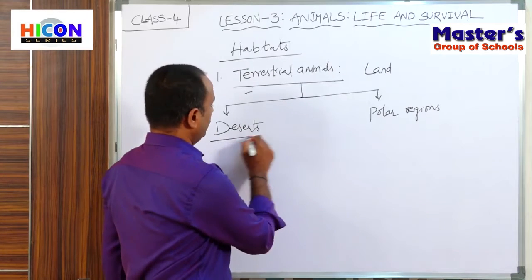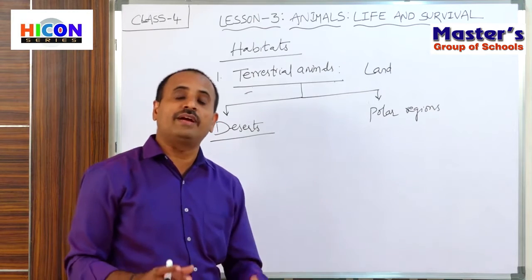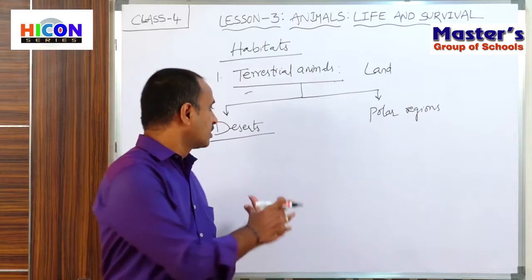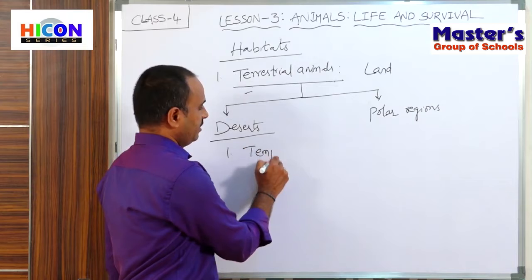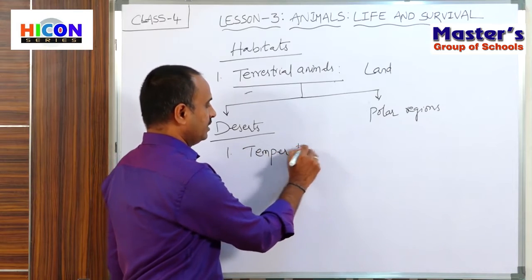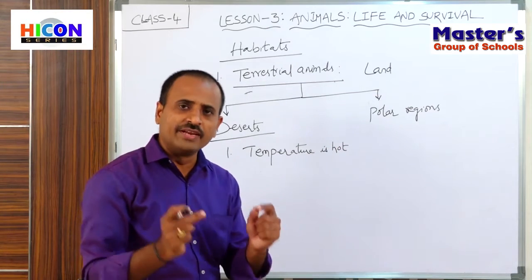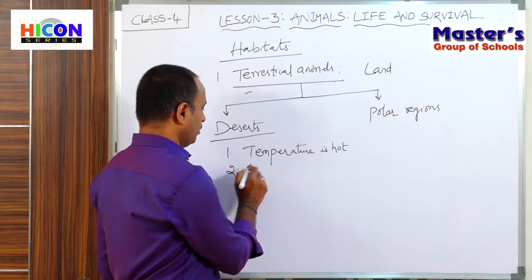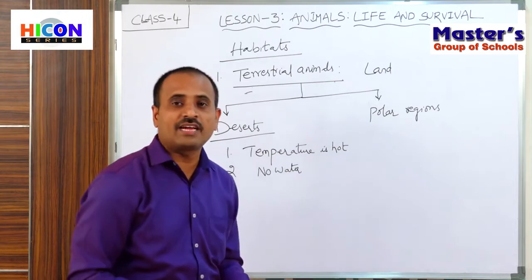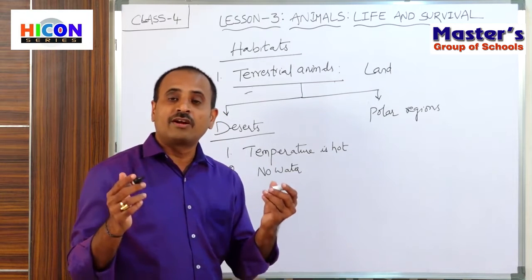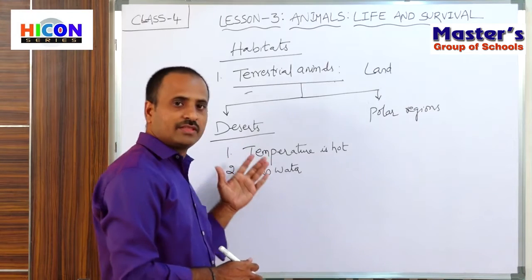First we will discuss the animals which live in deserts. The animals which live in deserts have some adaptations to survive in those climatic conditions. In deserts, the temperature is very high — very hot. And also the availability of water is very low — there is no water in the deserts. So the animals which live in deserts adopt some features to survive in these climatic conditions.